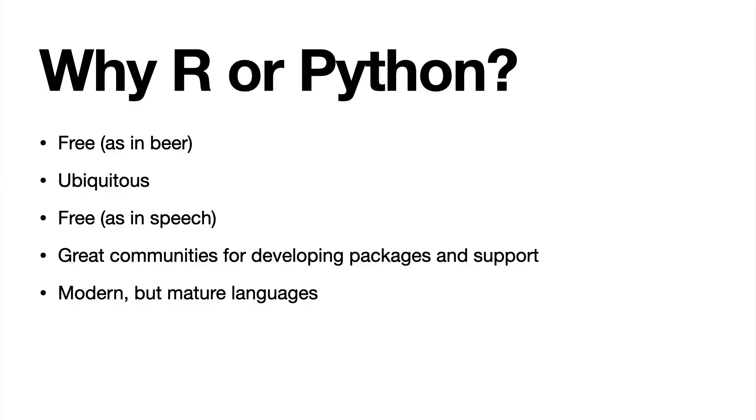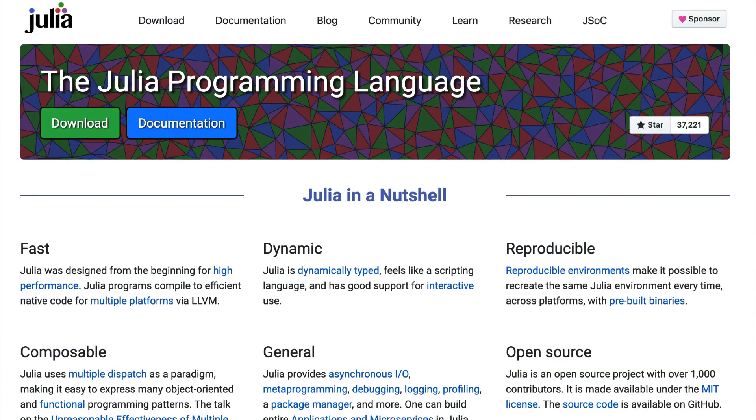R and Python are both modern yet mature programming languages. They've both been around for several decades and have a full set of features, plus a universe of packages that expand their utility. Other options like Julia are up and coming but not yet full-featured and don't have the big user community of R and Python. And Perl — which I learned as a postdoc about 20 years ago because it was popular in bioinformatics — became stale and didn't continue to develop the same way.